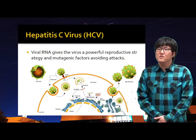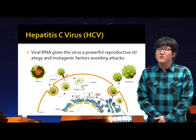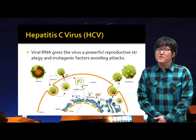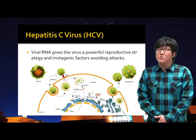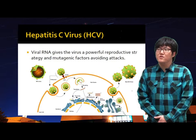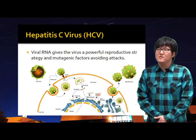The difficulty to fight against HCV may be caused by various obstacles, but the characteristics from complex structures and viral RNA are one of the biggest problems. The viral RNA can be directly read by the host cell's ribosomes, functioning like normal mRNA present in the cell. It gives the virus a powerful reproductive strategy. Also, the unstable nature of the RNA molecule provides a mutagenic factor, allowing the Hepatitis C virus to develop new genetic variations of itself.